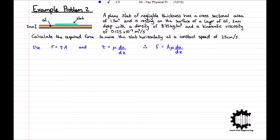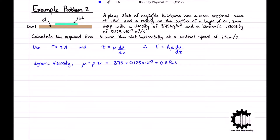For our problem, we have been provided with the kinematic viscosity of the oil, but we need the dynamic viscosity to find the force. So to find the dynamic viscosity of the oil, we must multiply the density by the kinematic viscosity. The dynamic viscosity of the oil, mu, is equal to 875 times 0.125 times 10 to the power of minus 3, which equals 0.11 pascal seconds.